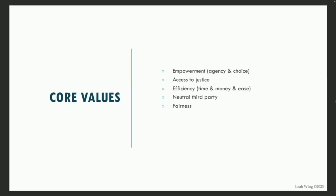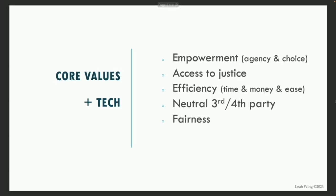Let me name some core values of justice systems and ADR — this is certainly not comprehensive. Under empowerment I put both agency and choice, because having agency and no viable set of choices is not full empowerment. Also: access to justice, efficiency in a variety of ways, and historically a neutral third party — though there are cultural values placed on neutrality not shared across all cultures. And issues of fairness. When we add tech, it has the ability to really magnify these — more choice, more agency, more options, more access to justice, greater efficiency, and adding a fourth party.